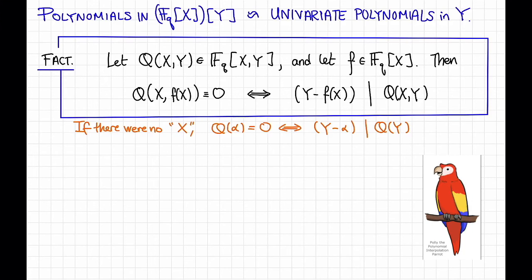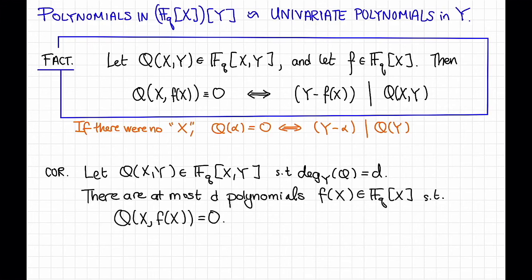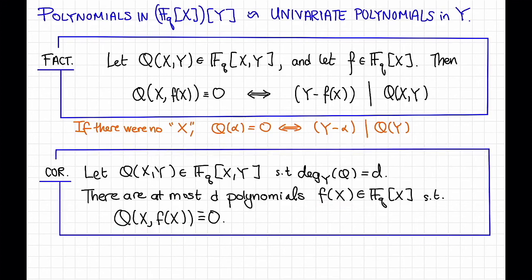A corollary of this fact is that low-degree polynomials don't have too many roots. So a corollary is: let Q(X,Y) be a bivariate polynomial over F_q so that the degree in Y is equal to d. Then I claim that there are at most d polynomials that are roots of this bivariate polynomial. That is, there are at most d polynomials F(X) over F_q so that Q(X, F(X)) is identically equal to 0. This essentially means that low-degree polynomials don't have too many roots, where here low-degree refers to the Y-degree and roots refers to polynomials F(X) that I can plug in to get something identically equal to 0.